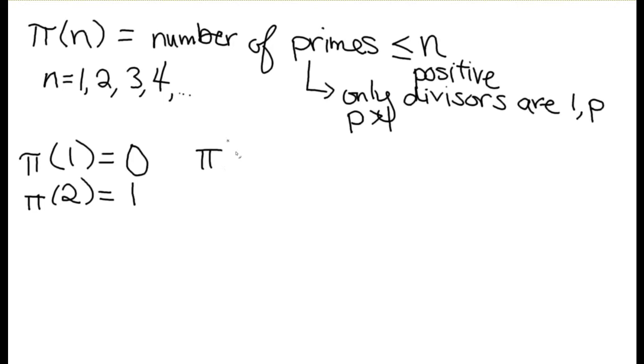If we look at pi of 3, 1 is not prime, 2 is prime and 3 is prime. So that's 2 prime numbers smaller than or equal to 3.